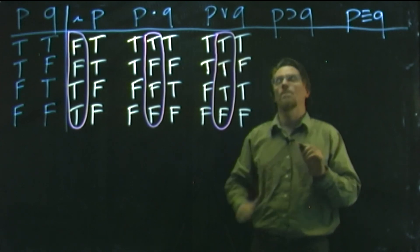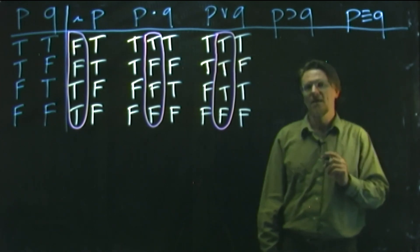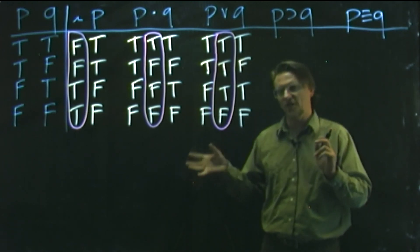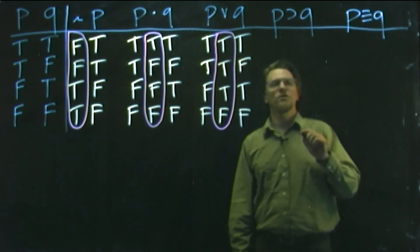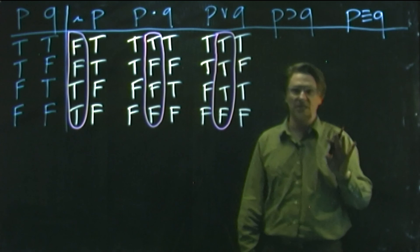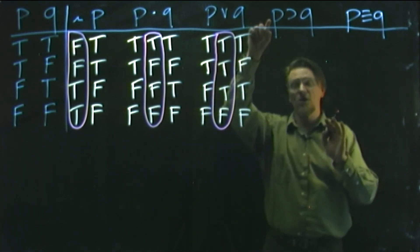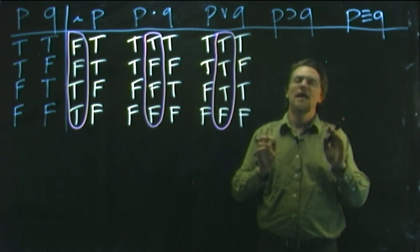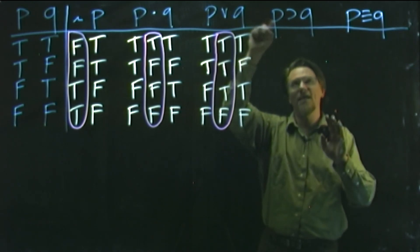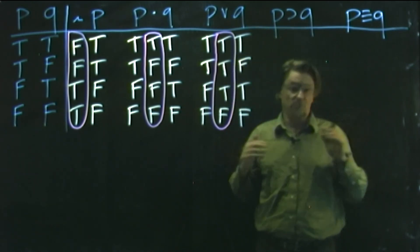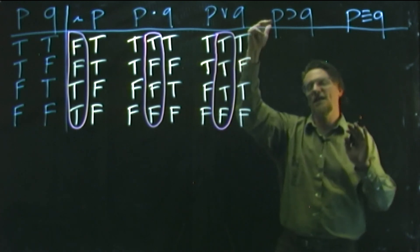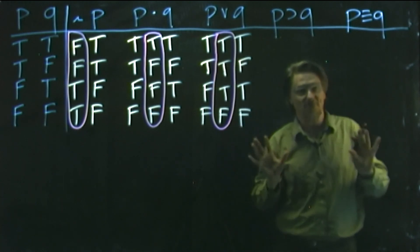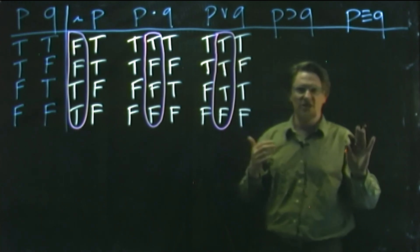We circle the main operator column and notice the important pattern for memorizing: the wedge is always true except when both sides feeding into it are false. Another way to think about this is: any time you have any true feeding into the wedge, the wedge will be true. Finally, we come to the horseshoe. This one we'll have to get away from the Everett and Seattle examples, but Hurley has a good example in your text. Hurley asks you to think of the antecedent P as if you get an A on the final exam.